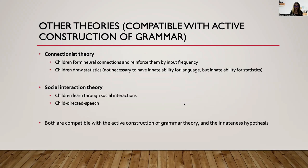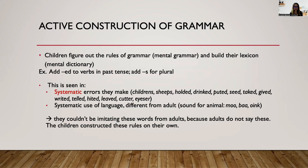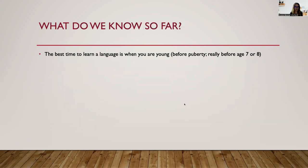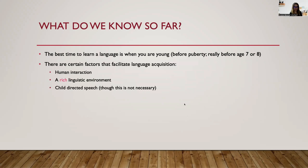Both of these theories are compatible with the active construction of grammar and the innateness hypothesis. The active construction of grammar is the one that a large number of linguists are more adoptive of. So let's just wrap it up. We know that the best time to learn a language is when you're young — before puberty, really before age seven or eight is the best time. And there are certain factors that facilitate language acquisition, such as human interaction, a rich linguistic environment, and child-directed speech — though as I said, that's not necessary.